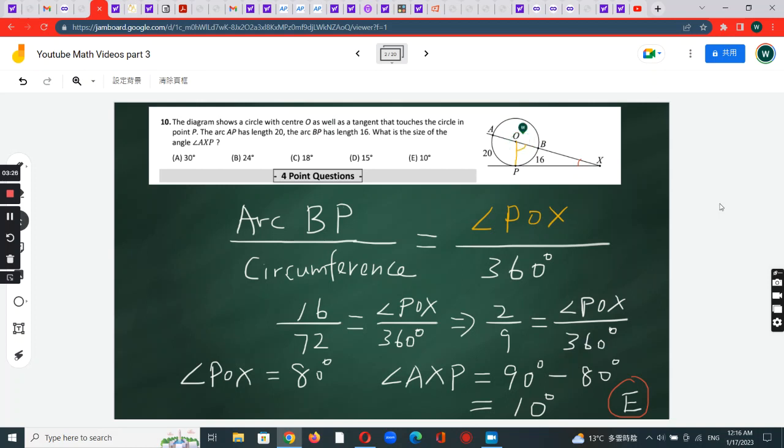After finding this angle, it's easy to calculate angle AXP. That's because XP is a tangent, so this is a right angle right here.